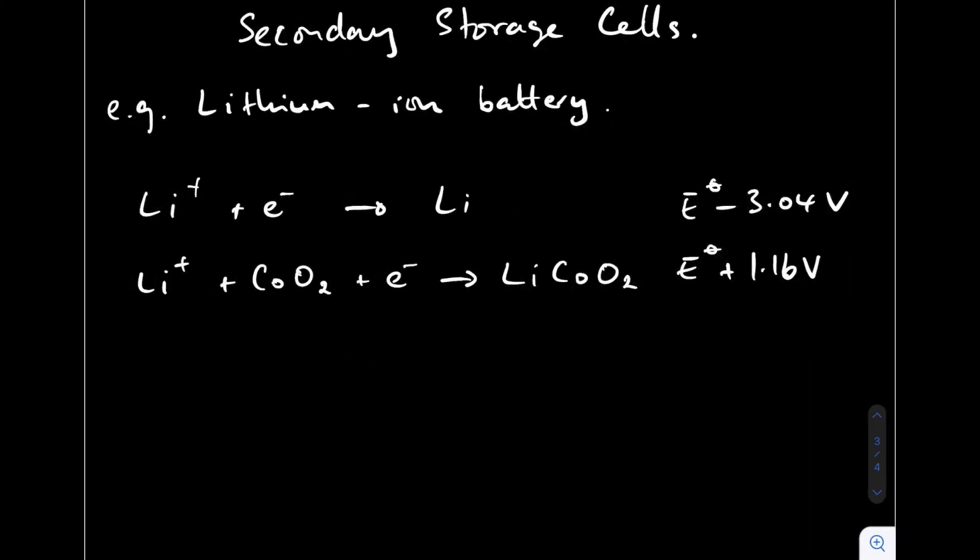Moving on to secondary storage cells, that's the lithium-ion battery that we've got in our mobile phones. That's an example of a secondary storage cell. Do exactly the same as before. Remember the chemistry is the same, so we've got two half-cells with different standard electrode potentials.